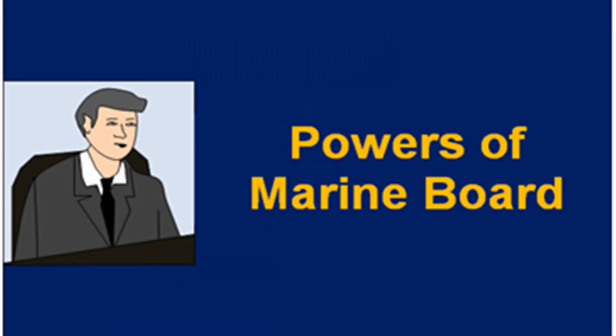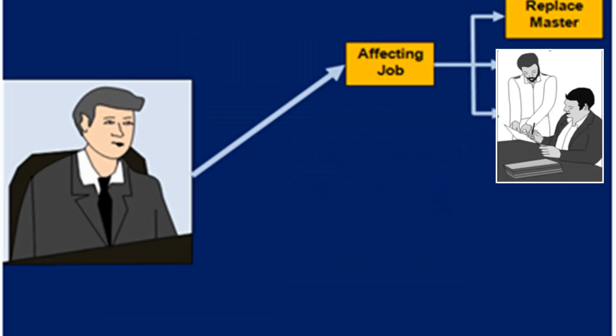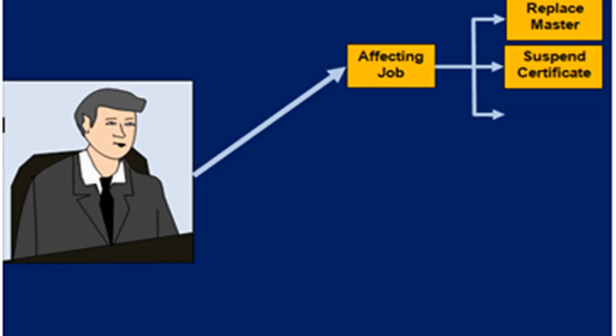Powers of Marine Board are listed under section 376. If the safety of an Indian ship or her cargo or crew, or the interest of the owner of an Indian ship or of the owner of the cargo, requires it, the master can be removed and another appropriate master brought on board. If the Marine Board is of the opinion that any master or officer of an Indian ship is incompetent, or has been guilty of any act of misconduct, or in case of collision has failed to render assistance and exchange information, or that loss, abandonment, stranding, serious damage, loss of life or serious injury has been caused by the wrongful act or default of any master or officer, the Marine Board can suspend the certificate of that master or ship's officer for a stated period.